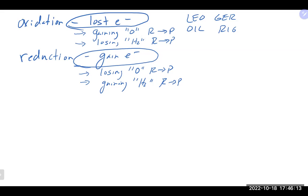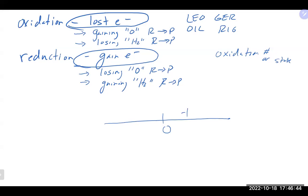To figure out what is being oxidized or reduced, we look at the oxidation number or oxidation state. Picture a number line: if you look at the oxidation state of a species on the left side of the arrow compared to the right side and it is moving in the more positive direction, that means it is going through oxidation — because losing electrons makes you more positive.